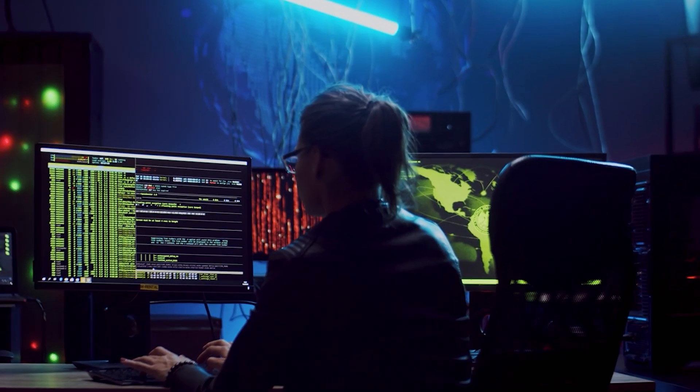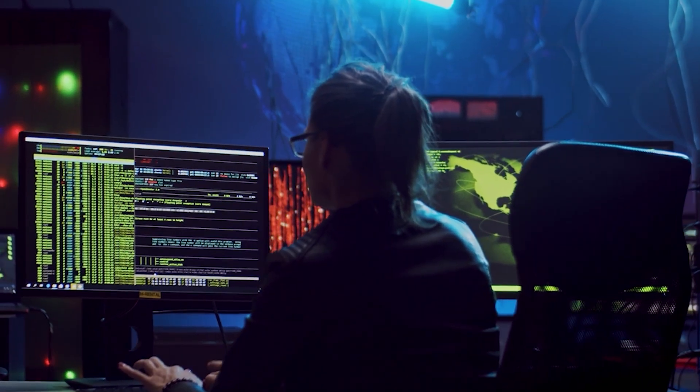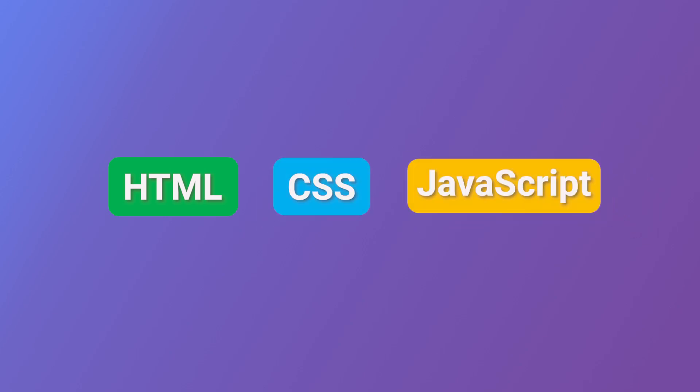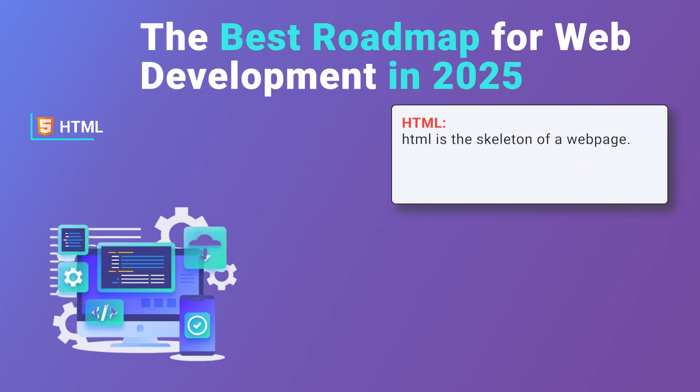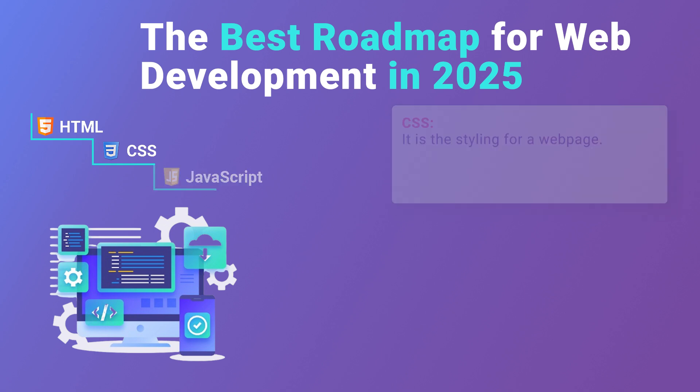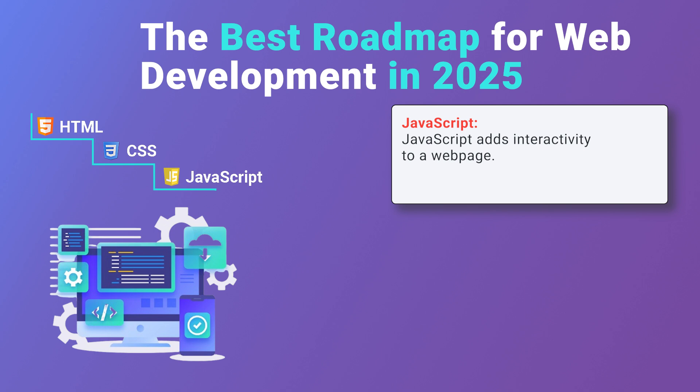Your first step in web development is to learn its three foundational technologies: HTML, CSS, and JavaScript. They are the essential first step in your learning journey. HTML is the skeleton of a web page — it creates the basic structure and content using simple tags. CSS is the styling for a web page — it makes HTML look good with colors, layouts, and designs. JavaScript adds interactivity to a web page, making websites dynamic and responsive to user actions.